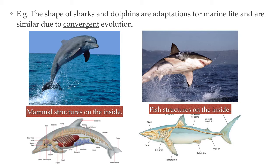Deep down, however, when we take a close look at their anatomy, their differences become obvious. For example, one breathes through gills and has a skeleton made out of cartilage, and the other breathes through lungs and has a skeleton made out of bones.